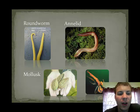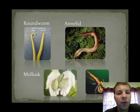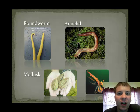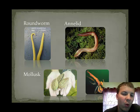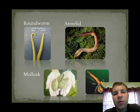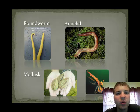The next group is the mollusk group, and this is one of the most diverse of the invertebrates. It ranges from the sedentary clam and oyster to the very fast-moving octopus and squid.